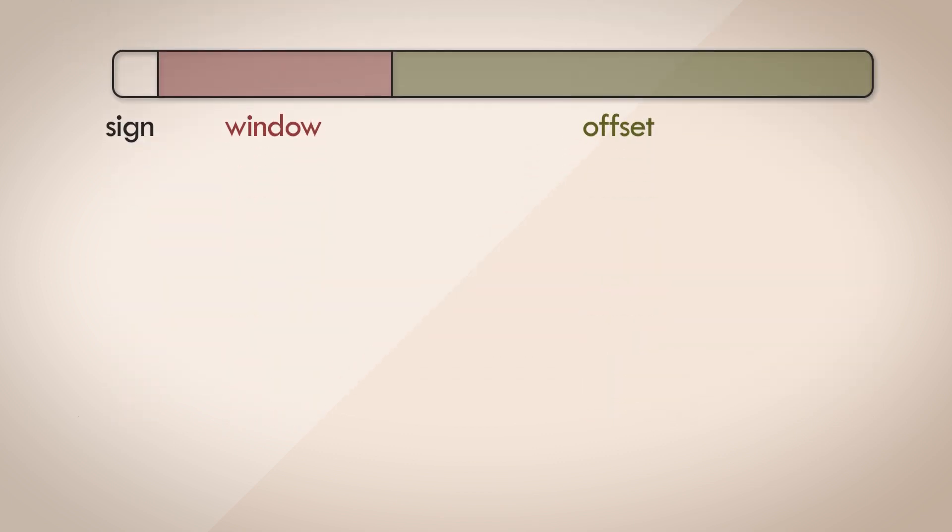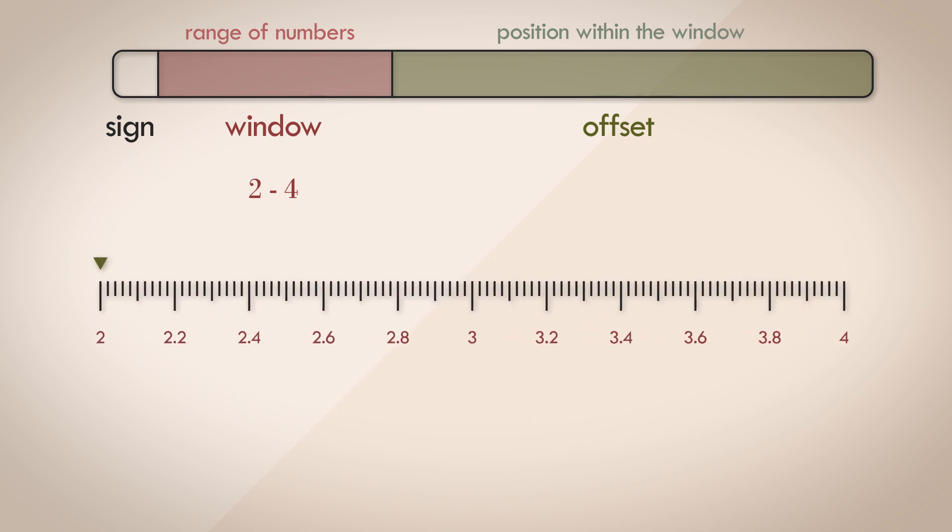The window represents a window of numbers, or a range of numbers. This is always a consecutive power of 2 numbers, like 2 to 4, or 4 to 8, or 8 to 16, or 1024 to 2048, or 2 to the power of 30 to 2 to the power of 31. It represents a range of numbers essentially. The offset pinpoints the exact position within the window of numbers.